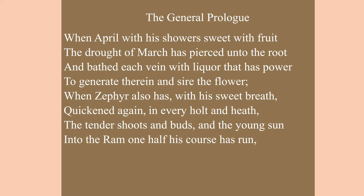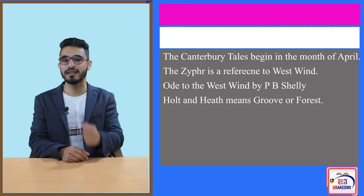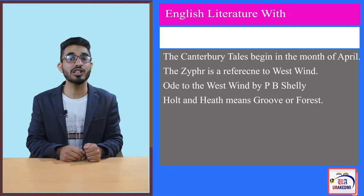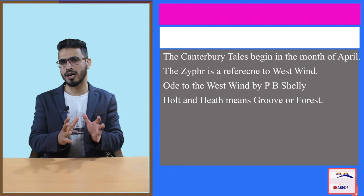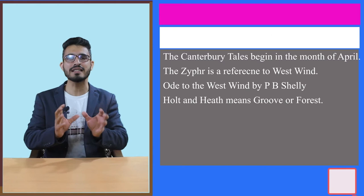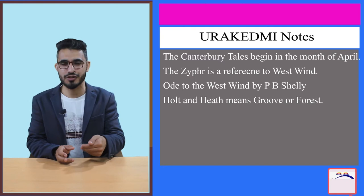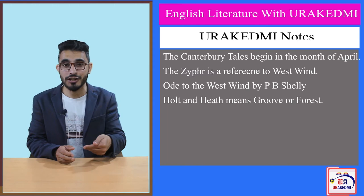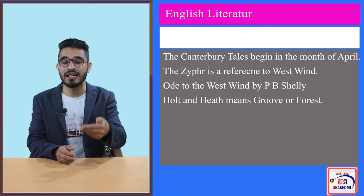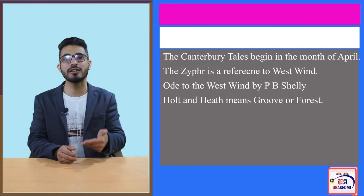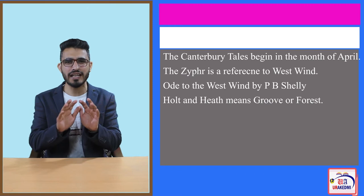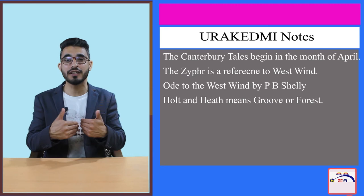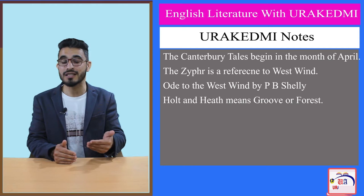Geoffrey Chaucer says the tender shoots and the buds are emerging. In the months of March and April you experience around you plants coming back to life — buds emerging, flowers emerging, leaves emerging, tender and sweet. Geoffrey Chaucer is first talking about vegetation, the wildlife, the plants which were struck hard by the winter, by snowfall and cold winds, and had almost died down, but have now been regenerated through those tender buds.